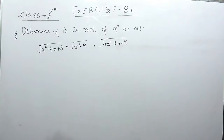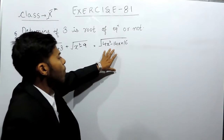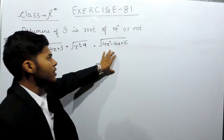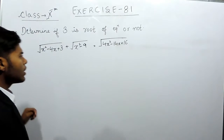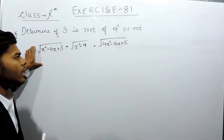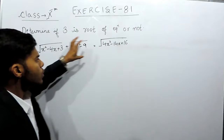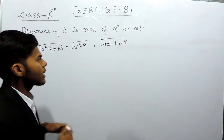Now you can see that this is not given as a proper quadratic equation. We have to make this a proper quadratic equation. For this we have to square both the sides.